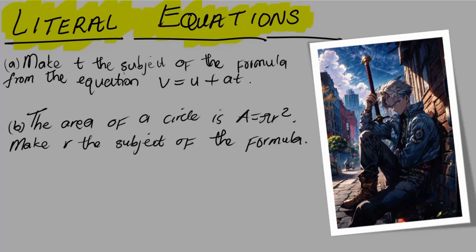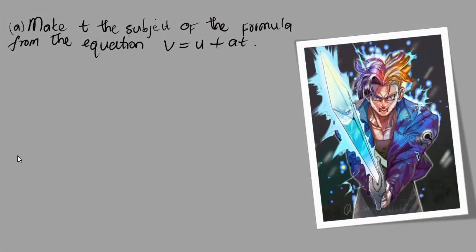Let's go straight to the first question. It says make t the subject of the formula from the equation v = u + at. The equation is v = u + at. What are we supposed to make the subject? This t here.